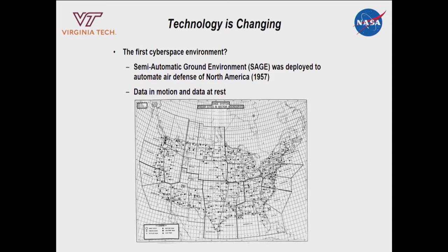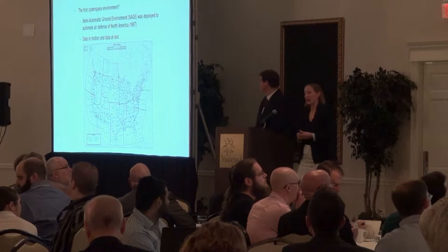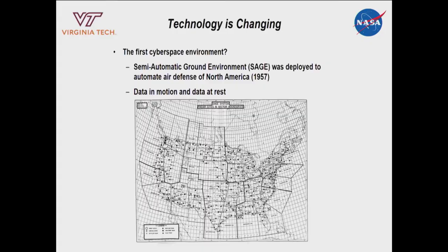The world is changing. Consider the Semi-Automatic Ground Environment — SAGE — from around 1957, arguably one of the first networked systems where you had data at rest (databases, location information) but also data in motion, with aircraft being tracked by radar that were connected and coordinated. To support that picture, they had centers that were 22,000 square feet in diameter.